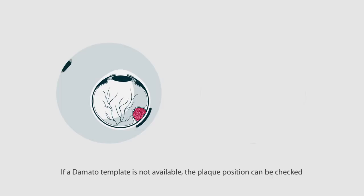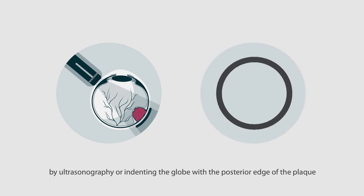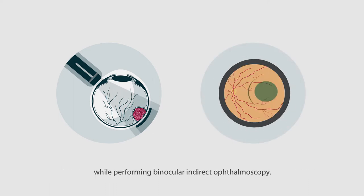If a D'Amato template is not available, the plaque position can be checked by ultrasonography or indenting the globe with the posterior edge of the plaque while performing binocular indirect ophthalmoscopy.